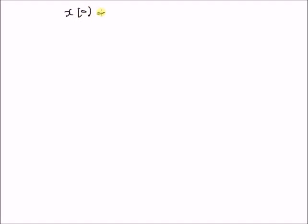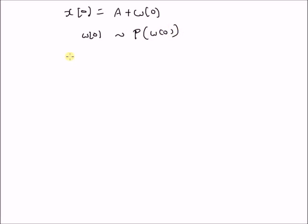Consider a single observation X(0) which has a linear model A plus W(0), where W(0), that is the noise, has an arbitrary probability distribution P. We want to derive the CRB for the variance of the estimator of A, that is variance of A-hat.